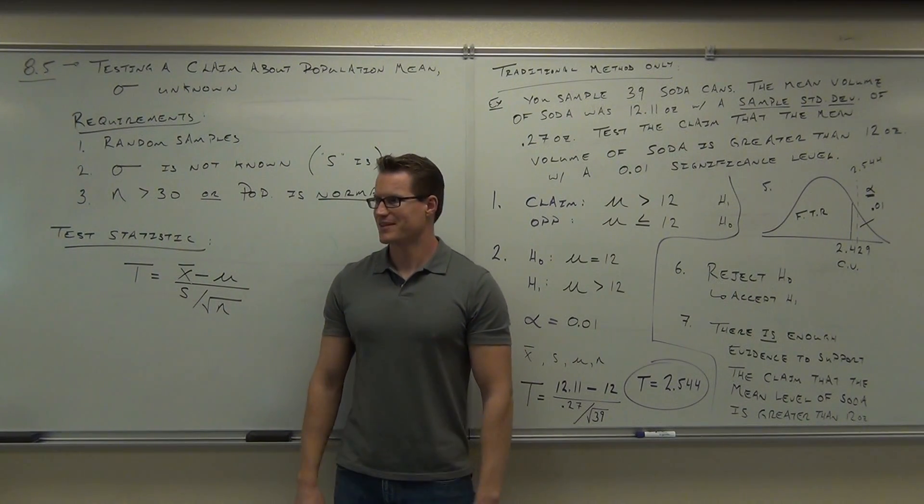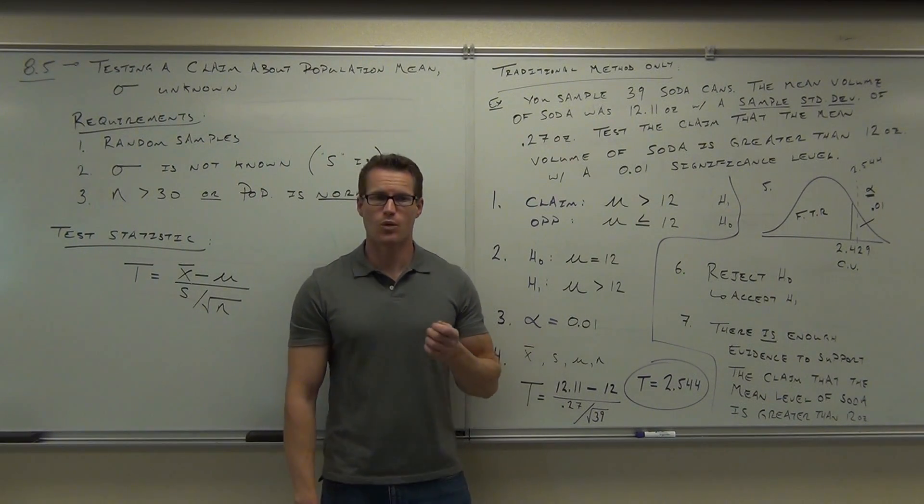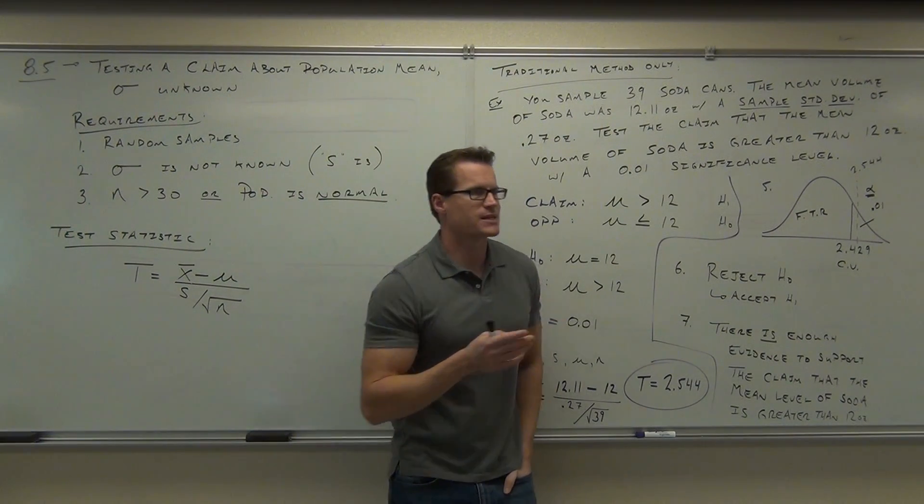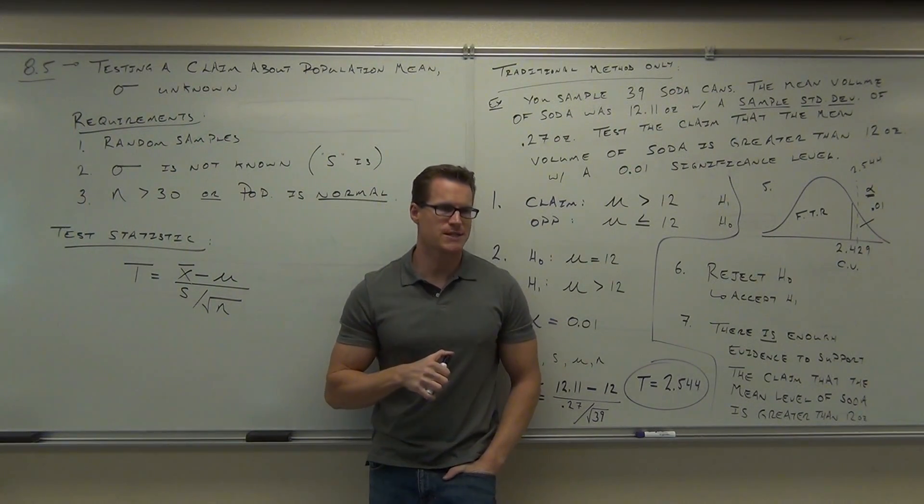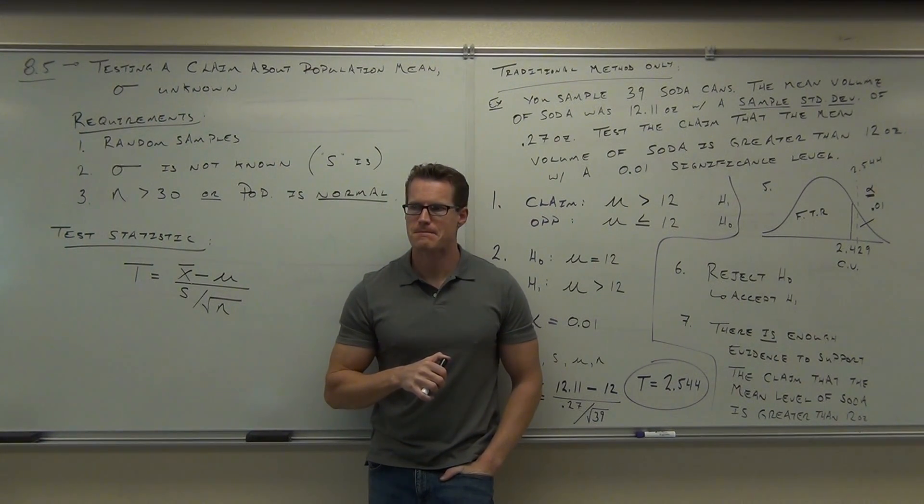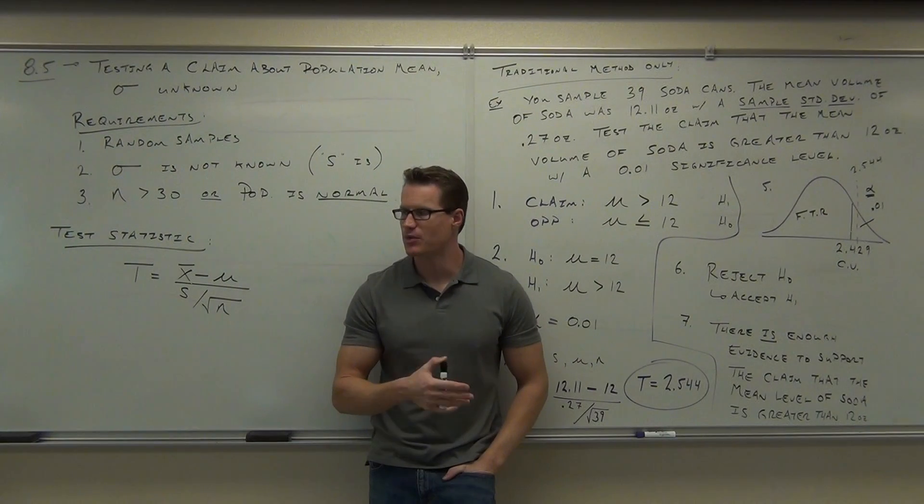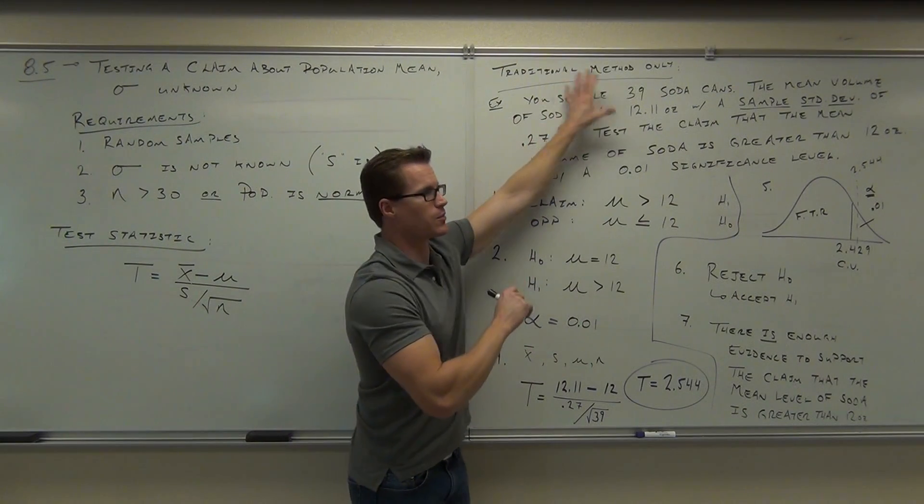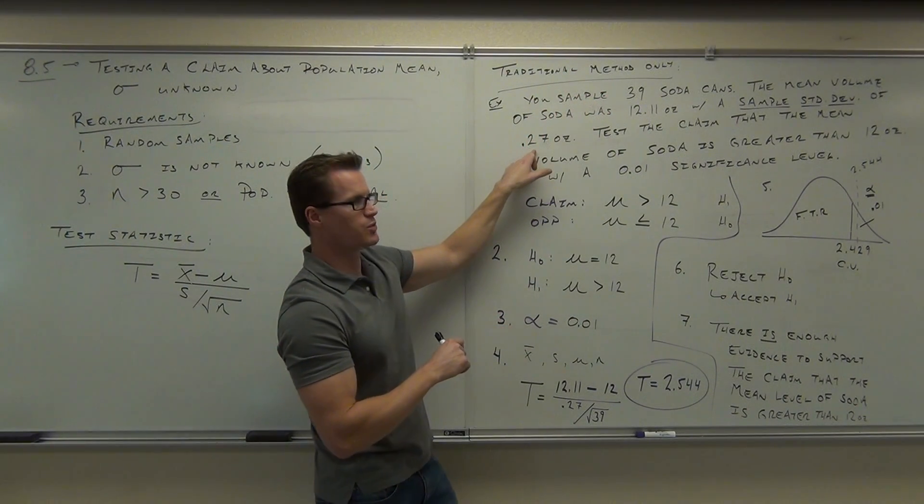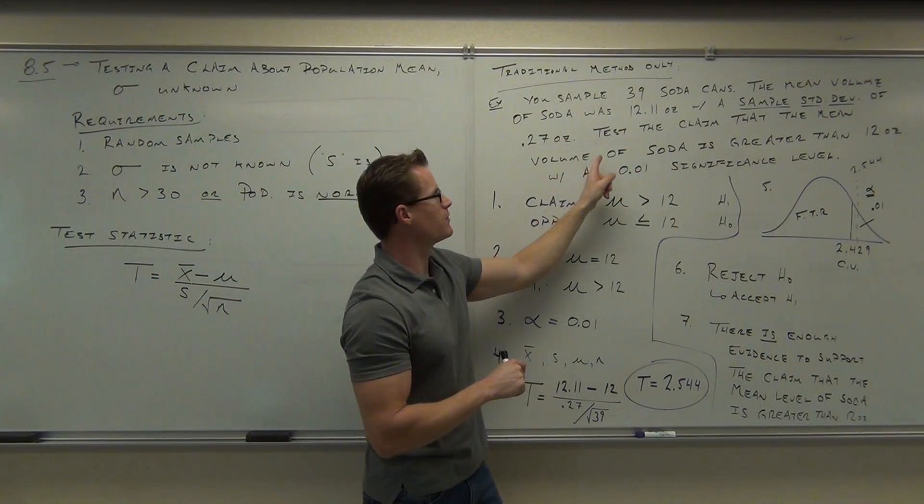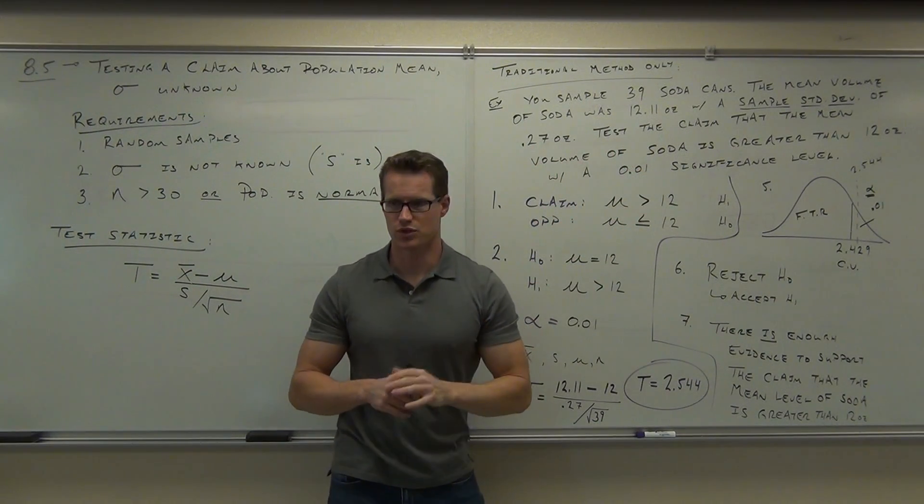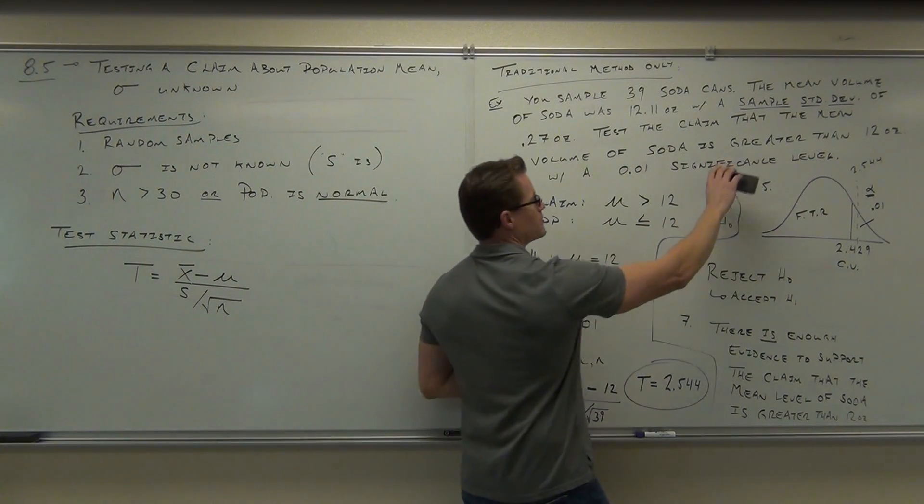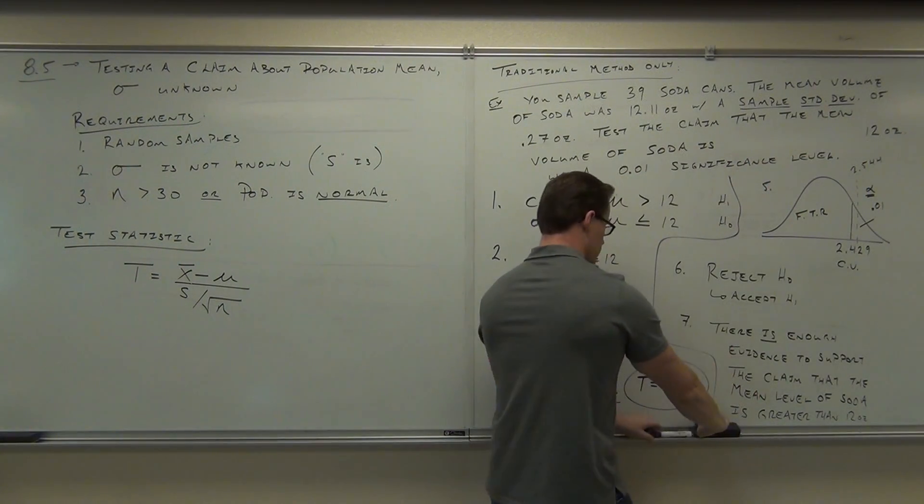Feel okay about this? You sure? Now I'm going to change the problem just slightly. What we're going to do is say, what if the guy had beforehand just said this? I didn't do my sample, right? I just want to know if we're either above or below. So without even doing a sample, what if we change the wording a little bit and say, instead of the claim that, so this all stays the same, 39 cans, 12.11 ounces, standard deviation is 0.27 ounces. Test the claim that the mean volume of soda is not equal to 12 ounces. So we're just testing whether we're giving away too much or not enough soda.